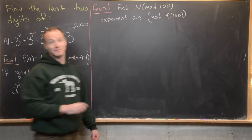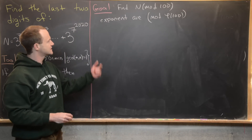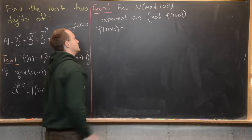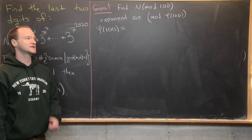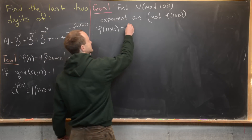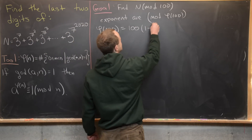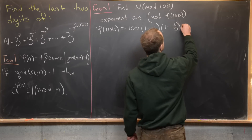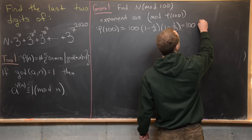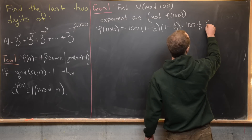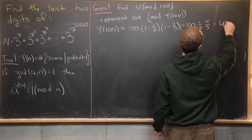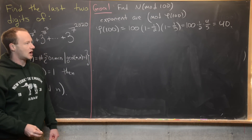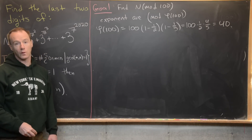Let's calculate phi of 100. Since 100 has only two prime factors, 2 and 5, the formula gives 100 times (1 minus 1/2) times (1 minus 1/5). That's 100 times 1/2 times 4/5, which equals 40. So we need to calculate all of our exponents mod 40.